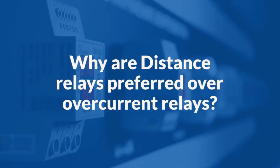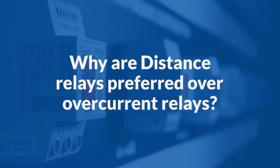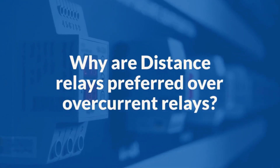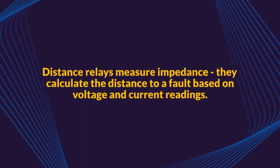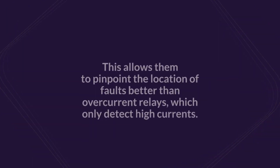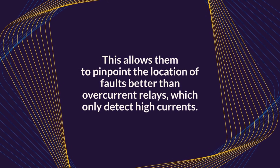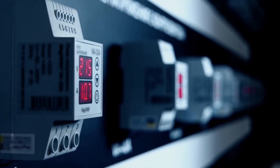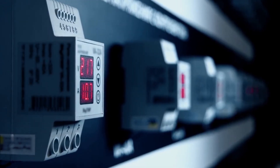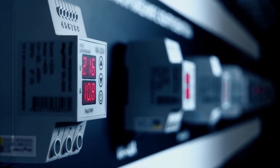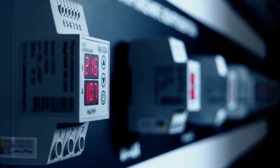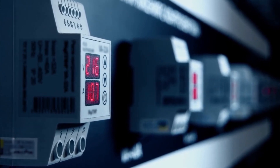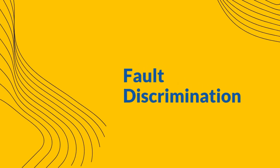Why are distance relays preferred over overcurrent relays? Distance relays measure impedance — they calculate the distance to a fault based on voltage and current readings. This allows them to pinpoint the location of faults better than overcurrent relays, which only detect high currents. Distance relays are frequently preferred over overcurrent relays for a few key reasons.